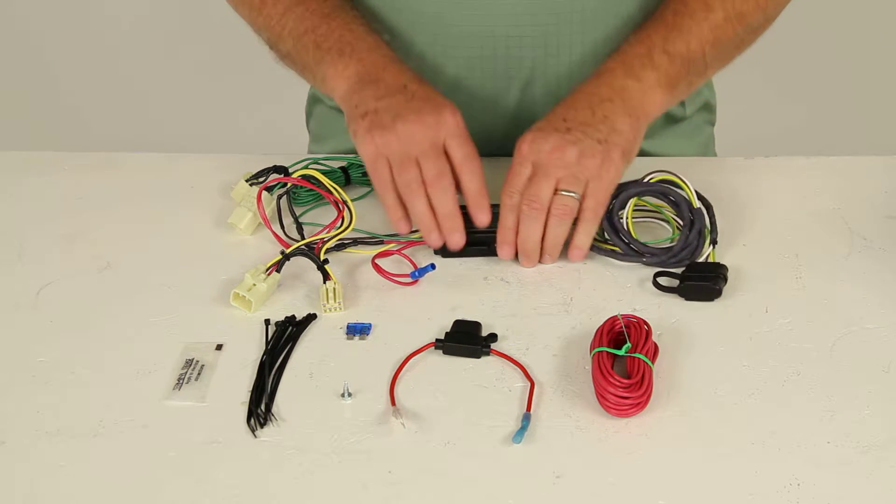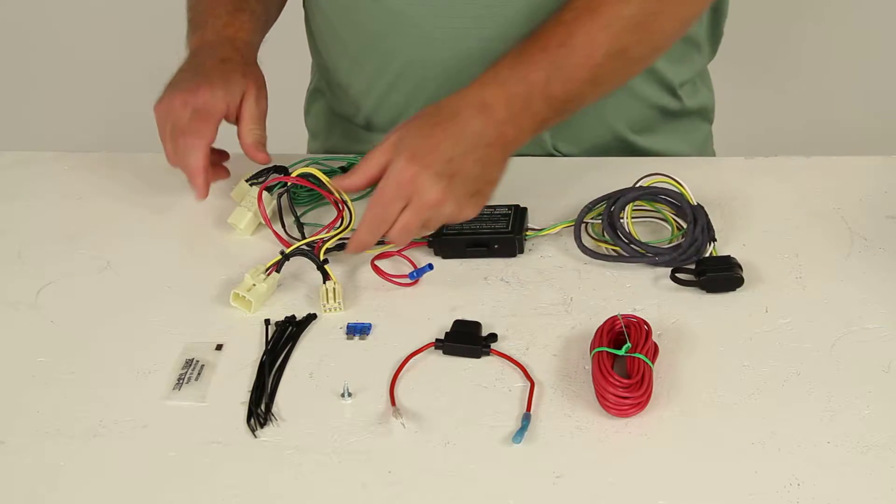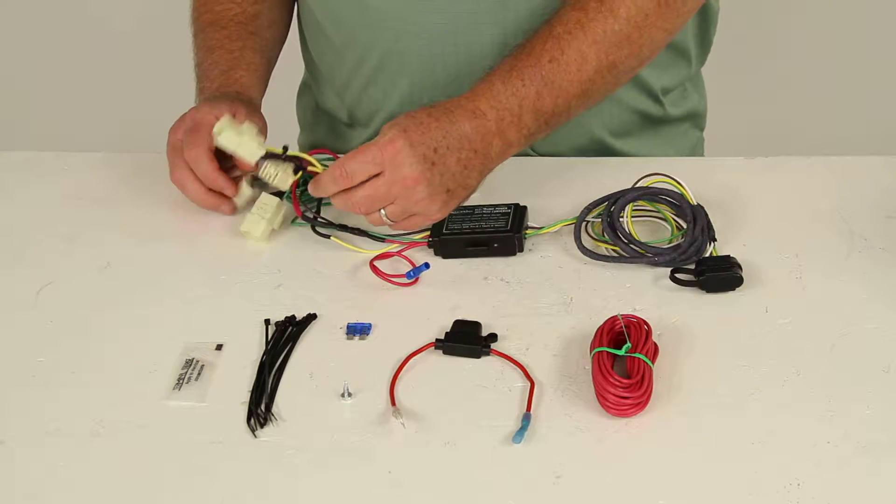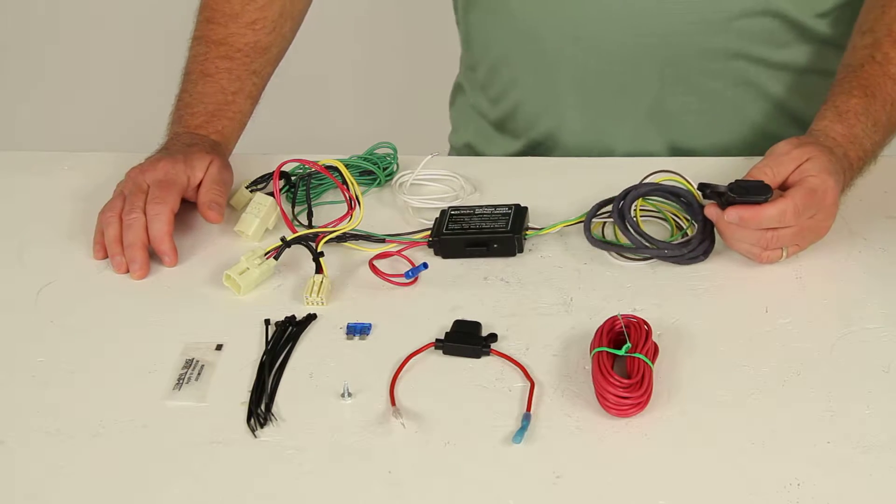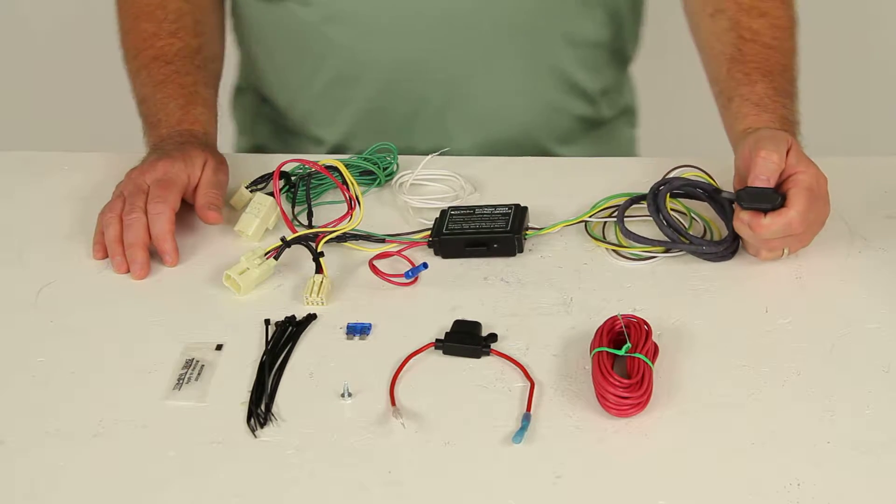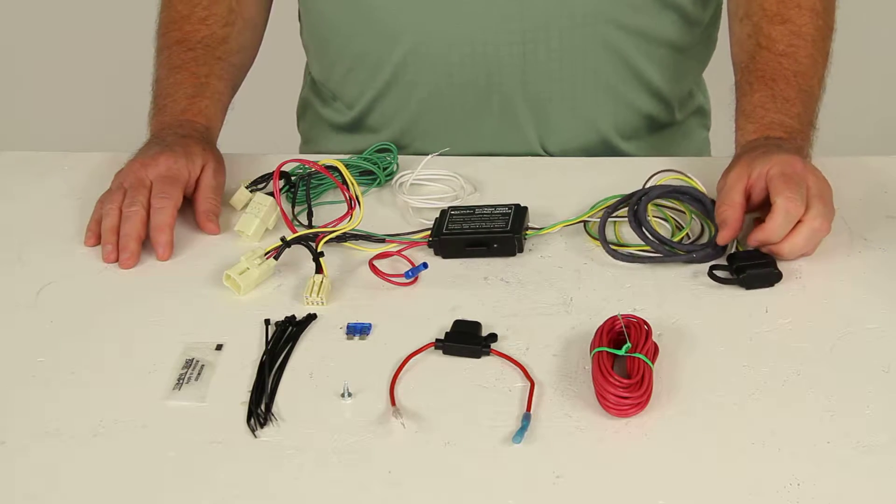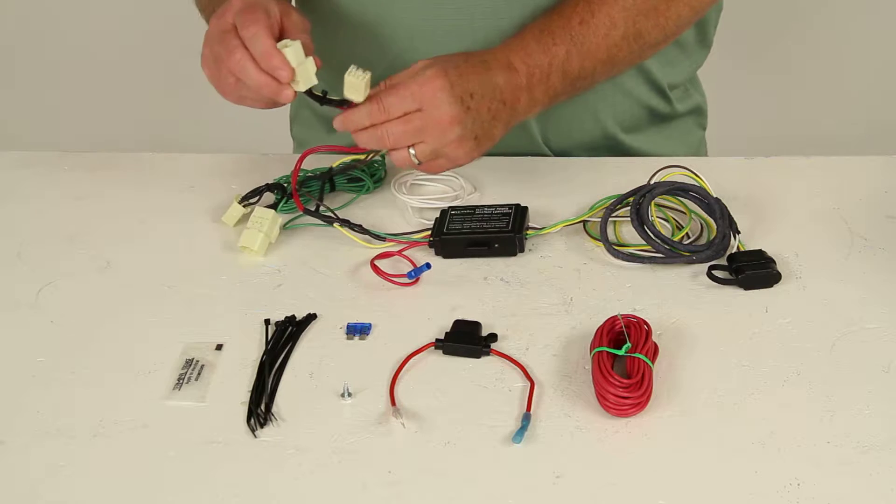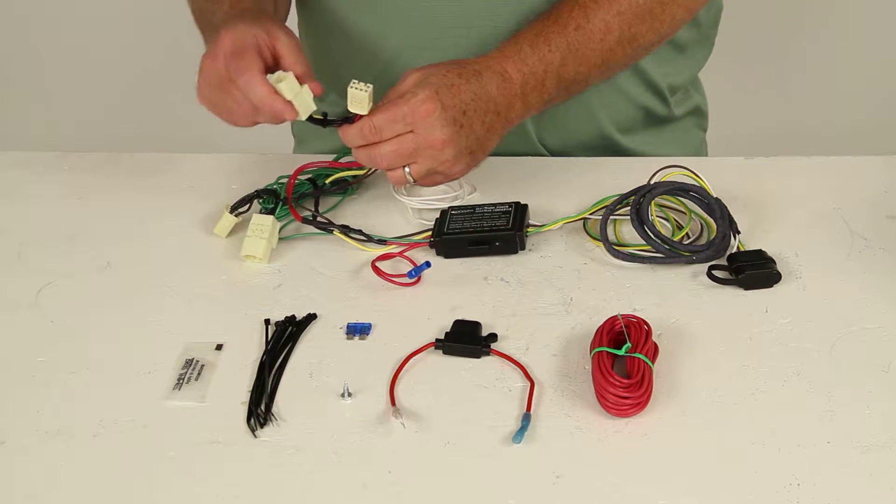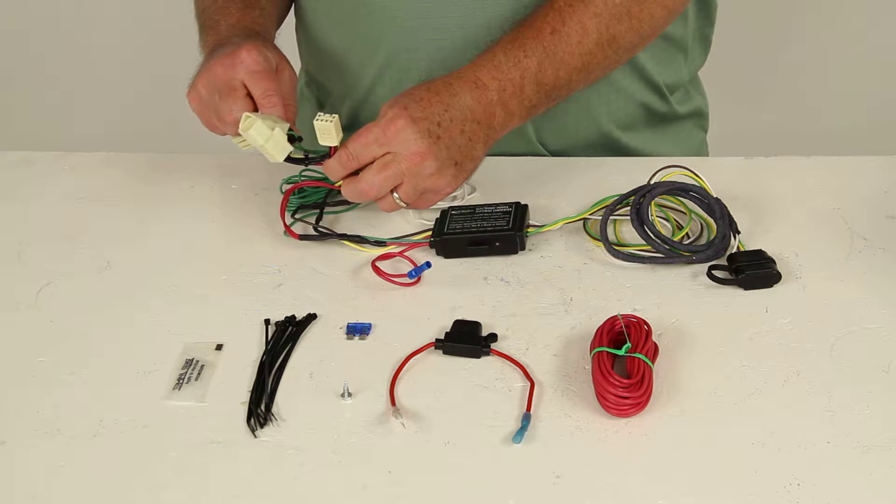This is a plug-in simple custom wiring kit which will utilize the factory connectors on your vehicle to hook to, and that will allow you to have a four-way at the back of your vehicle to plug in your trailer wiring harness to get lights on your trailer. There are no cutting or splicing required and basically these connectors are just like your factory connectors. These will plug into the back of your tail lights.